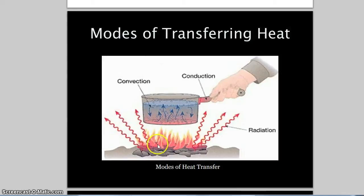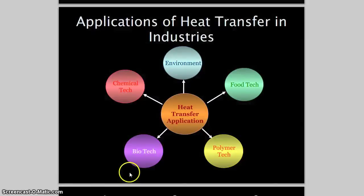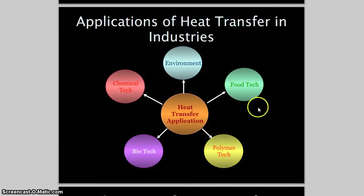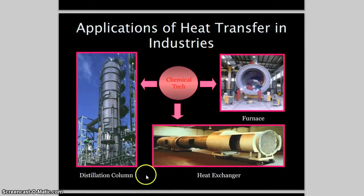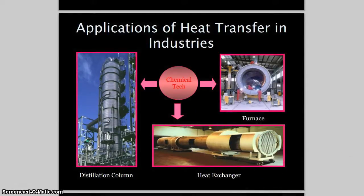Now let's look at the application of heat transfer in industry. Heat transfer is applicable across chemtech, environmental, food tech, polytech, and biotech industries. In chemtech, heat transfer is used in distillation columns, furnaces, and heat exchanger systems. Distillation columns are used for petroleum separation, furnaces are used for melting iron ore to make steel, and heat exchangers are very common throughout industry.